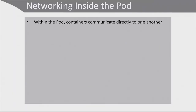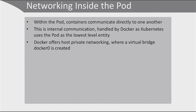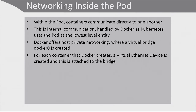Now let's talk about networking within a pod. Within pods, containers communicate directly to one another — this is internal communication handled by Docker, as Kubernetes uses the pod as the lowest-level entity. The networking within the pod is not handled by Kubernetes at all. Docker offers host private networking, where a virtual bridge named Docker0 is created. For each container that Docker creates, a virtual Ethernet device is created and attached to the bridge. The virtual Ethernet device is the glue outside of the container that connects the container to the bridge — like a virtual Ethernet cable.